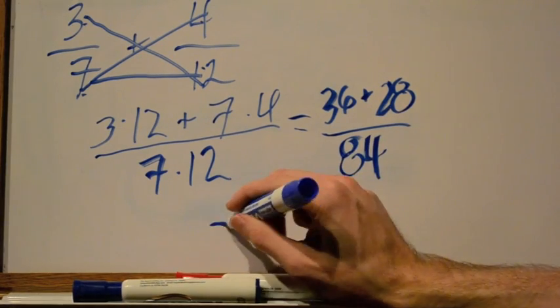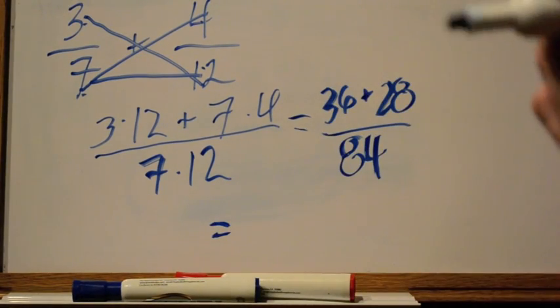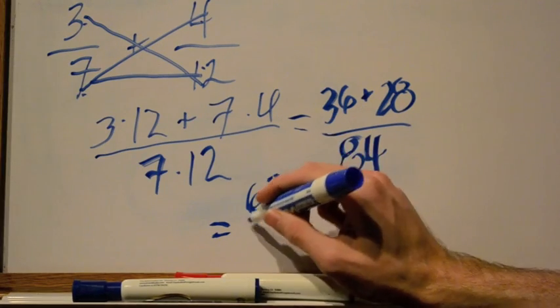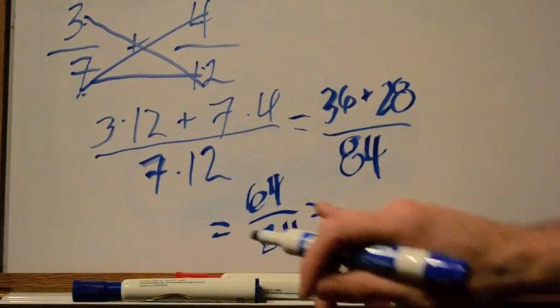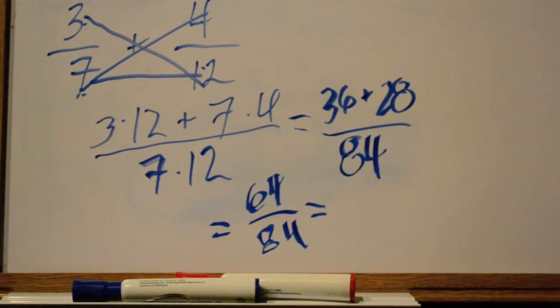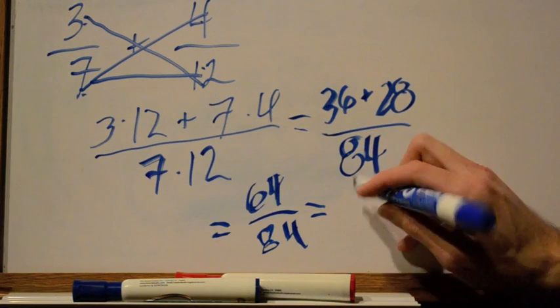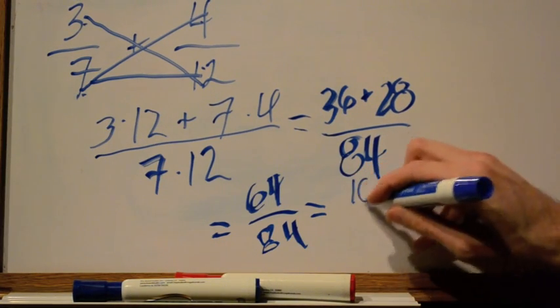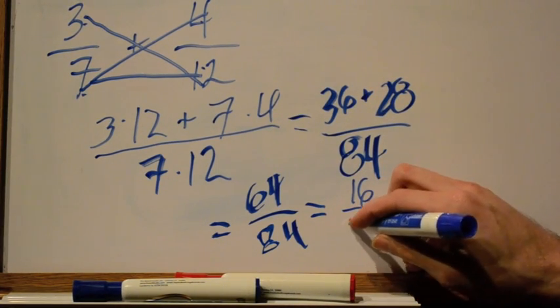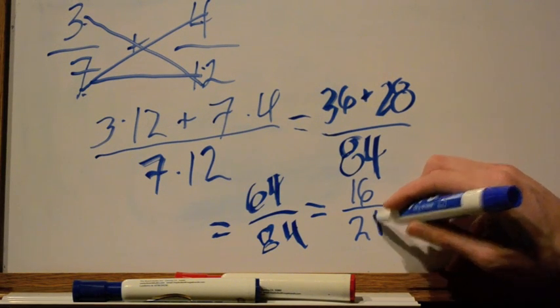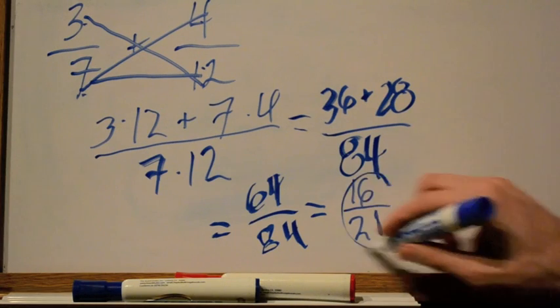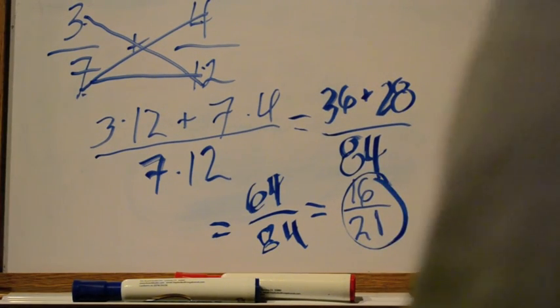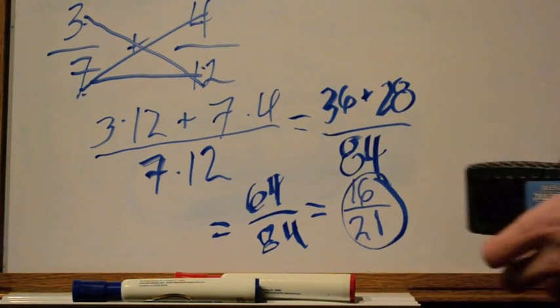What do we get? We get 36 plus 28 is 64 over 84. Now, fortunately, this can be simplified. Divide both of them by 4, and what we get is 16 over 21. 16 over 21 is our final answer. So you can see that this is a little bit faster than doing it the other way.